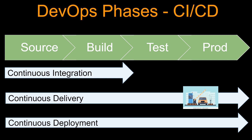With continuous deployment, every change that passes all stages of your production pipeline is released to your customers. There is no human intervention, and only a failed test will prevent a new change from being deployed to production. Continuous deployment is an excellent way to accelerate the feedback loop with your customers and take pressure off the team, as there is no release day anymore. Developers can focus on building software and they see their work go live in minutes after they have finished working on it.